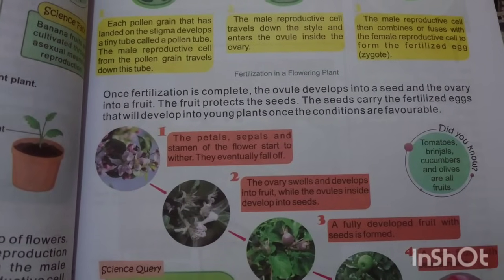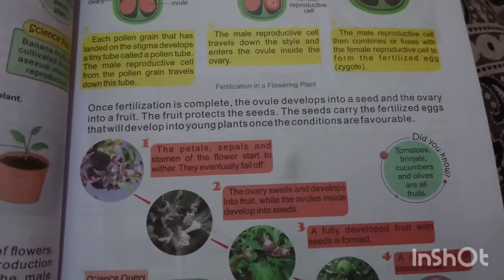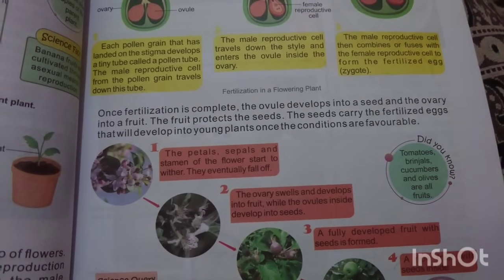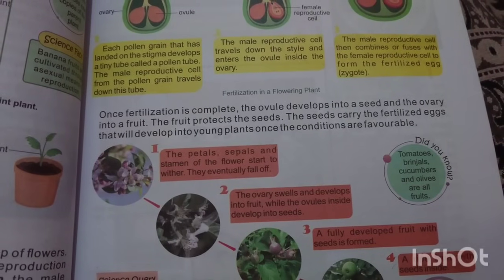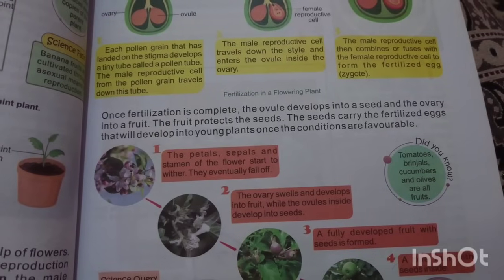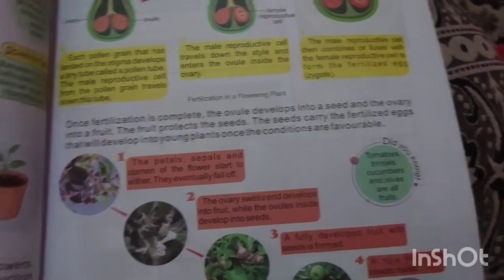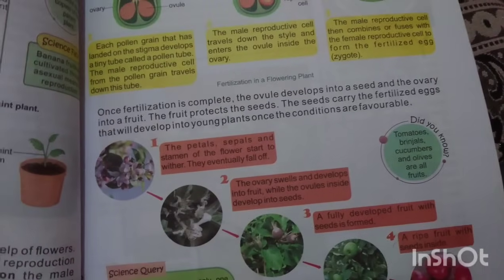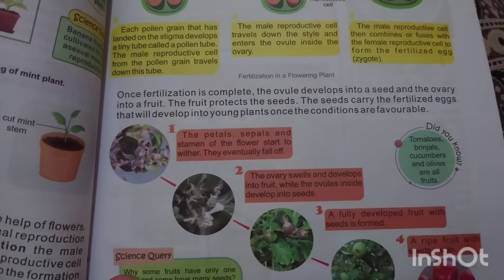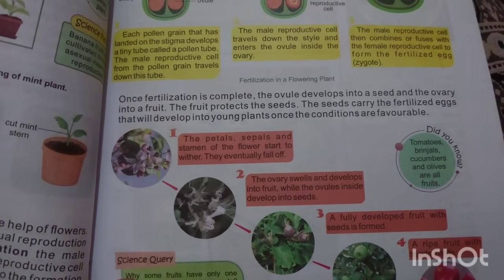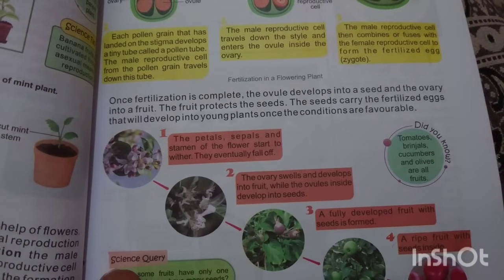Once fertilization is complete, the ovules develop into seeds and the ovary develops into fruit. The fruit protects the seeds. Seeds carry the fertilized egg, which will develop into a young plant once conditions are favorable. The petals, sepals, and stamens of the flower start to wither and eventually fall off, while the ovary develops into fruit.